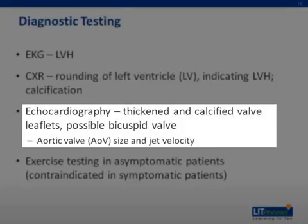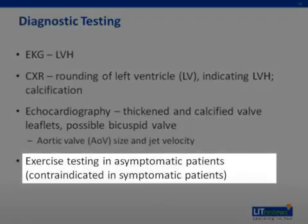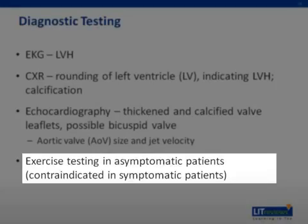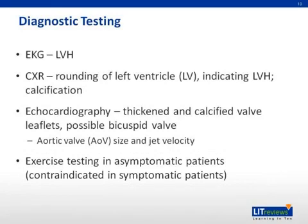Echocardiography also provides an accurate and reproducible estimate of aortic valve size and aortic jet velocity, as well as documenting left ventricular hypertrophy and function. In patients without symptoms, exercise testing can be helpful to identify an abnormal blood pressure response, exercise-induced symptoms, or limited exercise capacity. Exercise testing is contraindicated in symptomatic patients due to the risk of complications including sudden death. Cardiac catheterization, previously the diagnostic method of choice, is now only recommended when noninvasive testing is inconclusive.